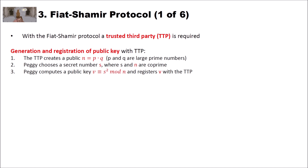Now let's have a look at a real zero-knowledge protocol: the Fiat-Shamir protocol. This protocol requires a trusted third party, which we call TTP. The protocol starts with the generation and registration of a public key with the trusted third party. In step one, the trusted third party creates a public n, which is a product of two very large prime numbers, so that it is impossible to factorize n.